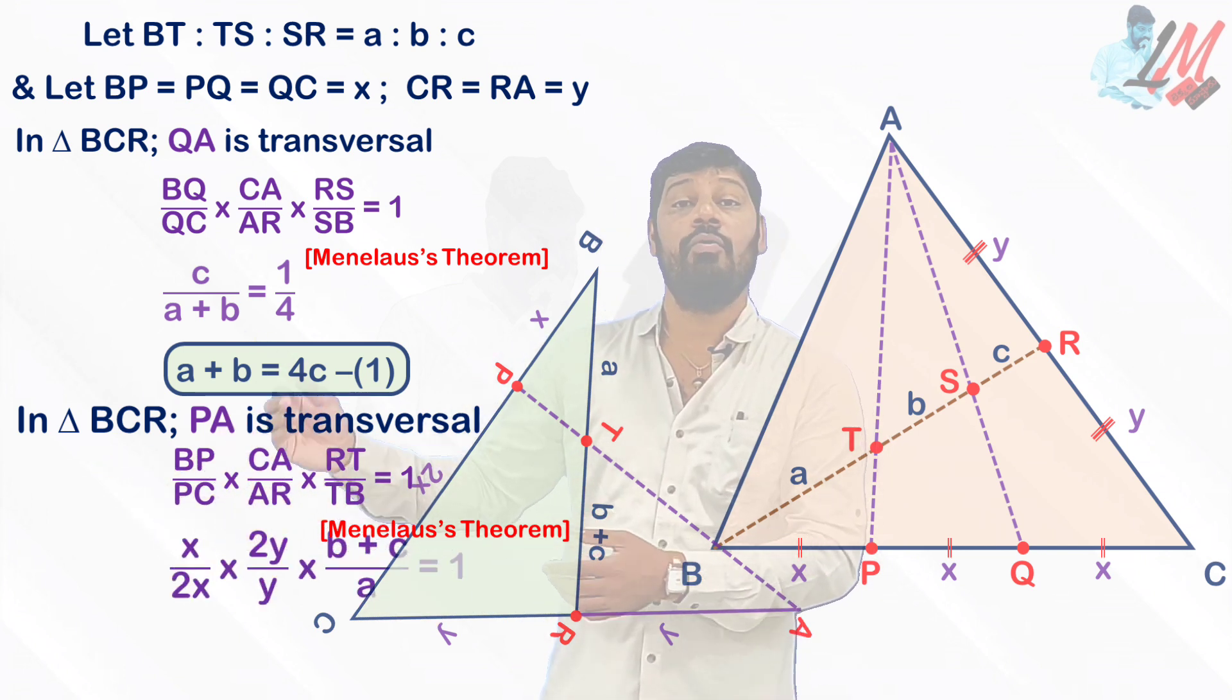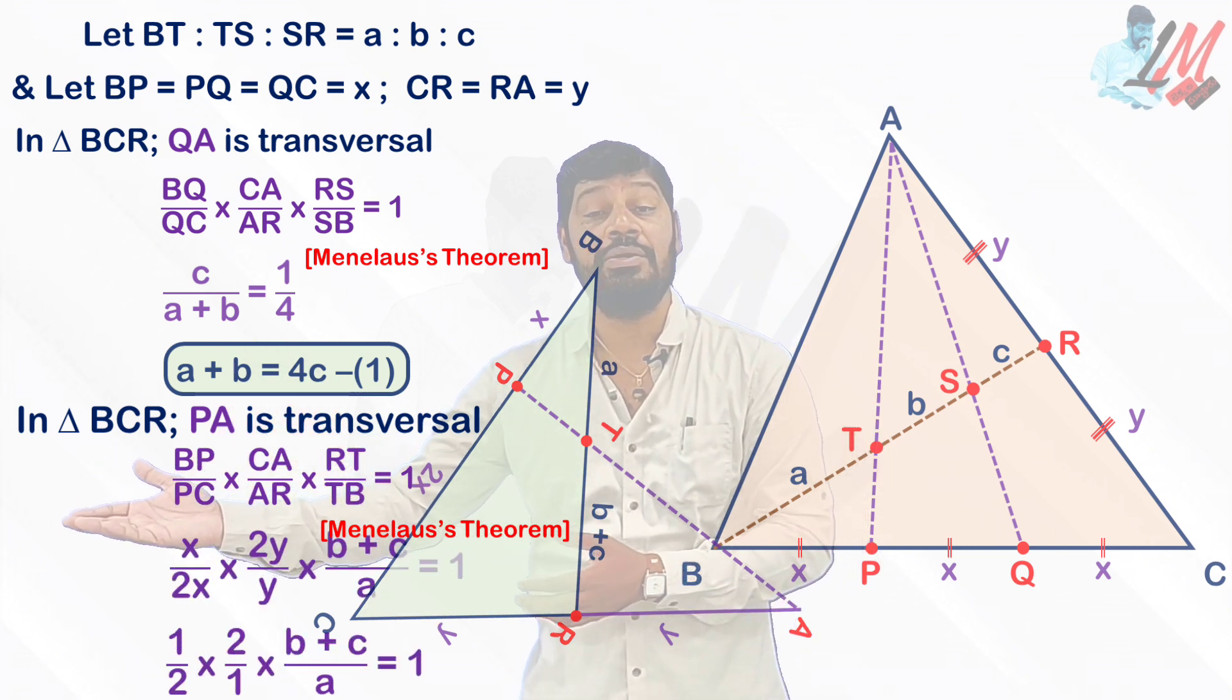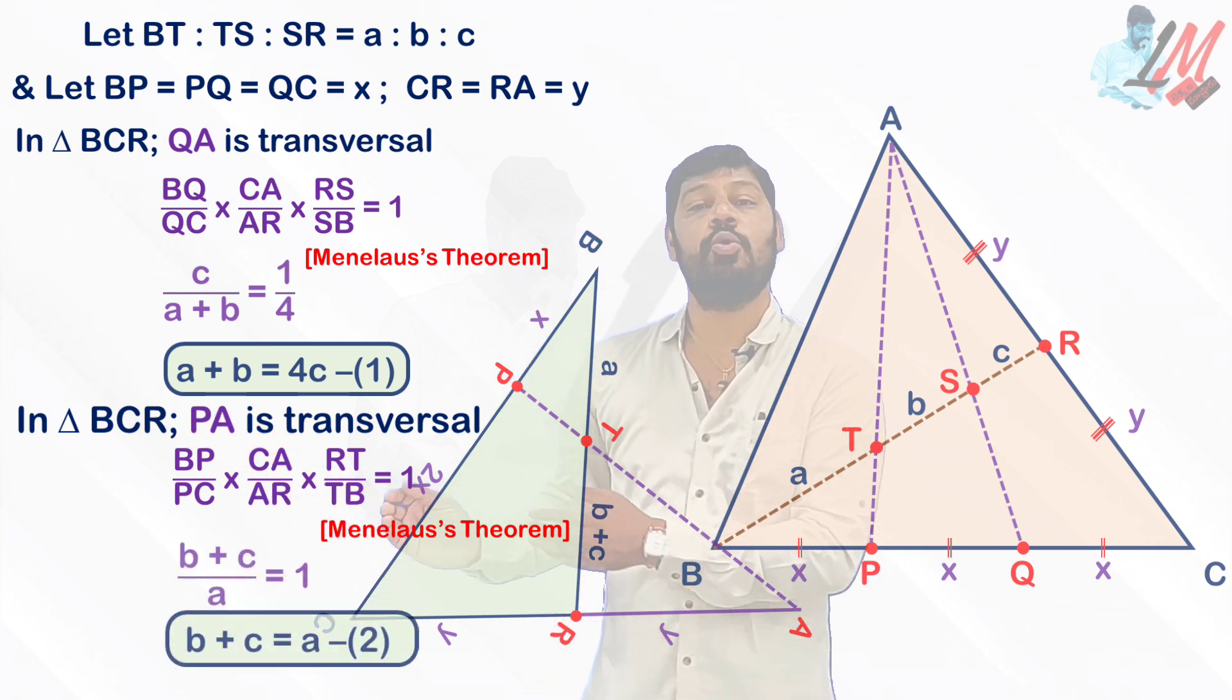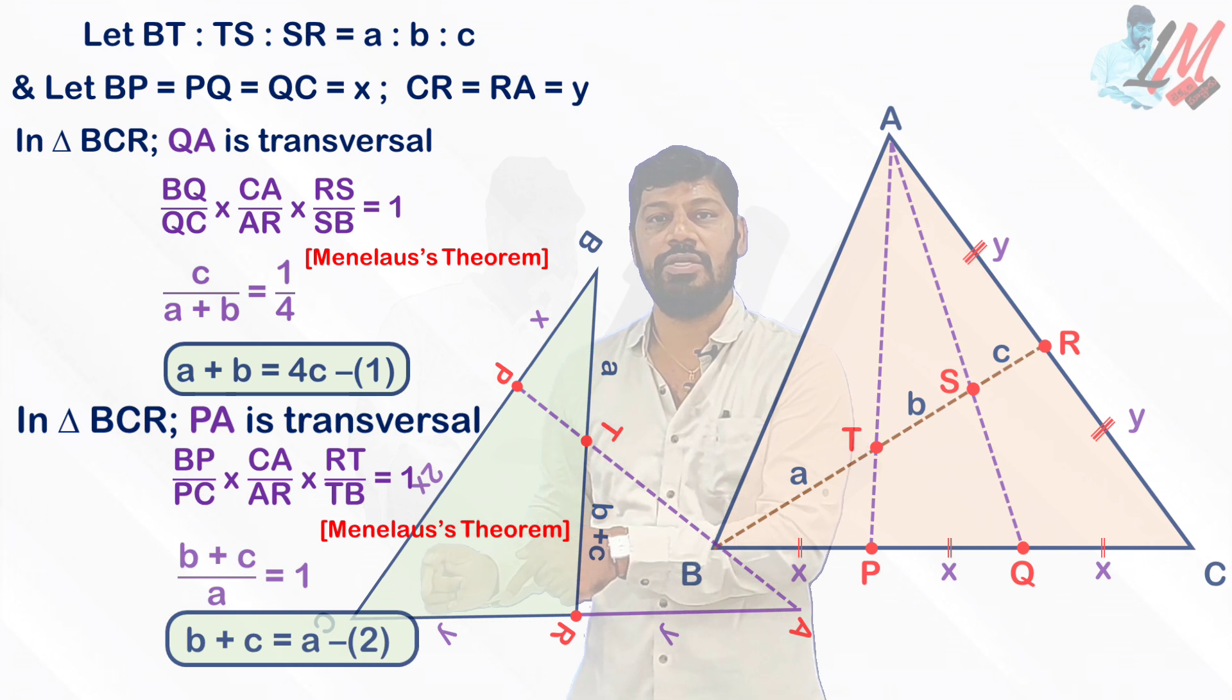What you are going to get on substituting the values: on simplification we are going to get B plus C equal to A, then make it as equation 2.